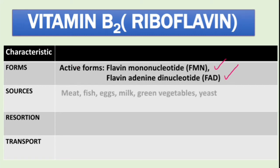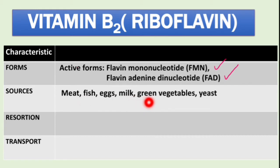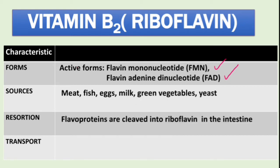As for sources, vitamin B2 is found in meat, fish, eggs, milk, green vegetables, and yeast. From these foods it is usually in the form of flavoproteins. For absorption, the flavoproteins are cleaved into riboflavin in the intestines. Transport in blood is usually via albumin and immunoglobulins.